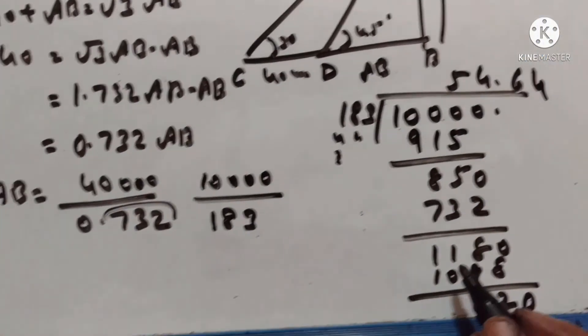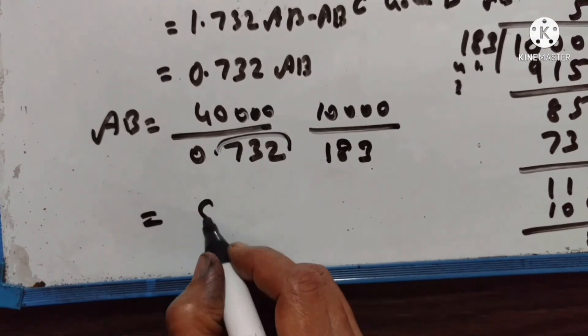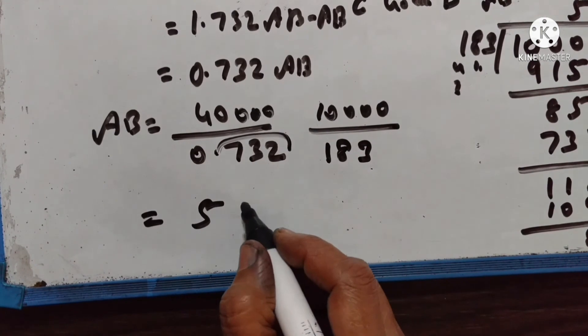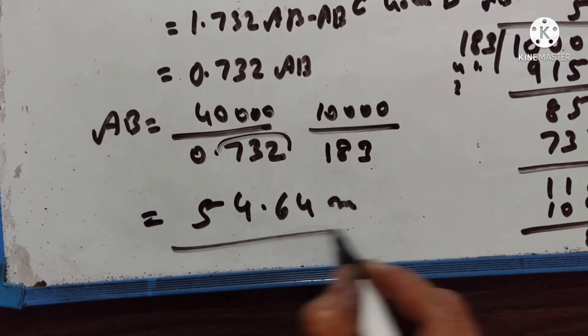54.64 — the height of the building is equal to 54.64 meters.